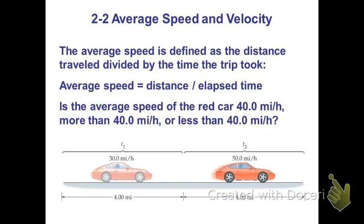Red car, and let's find the average speed. And the question is, well, if the car goes 30 miles per hour for a time of T1 and for a distance of 4 miles,